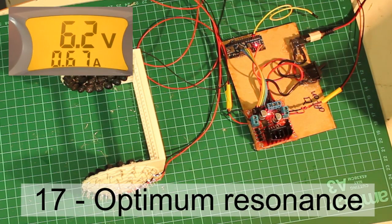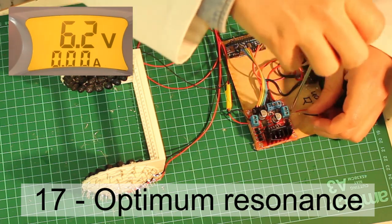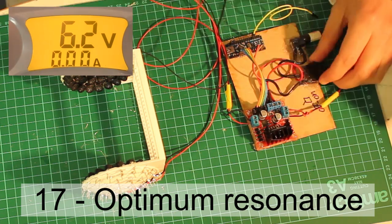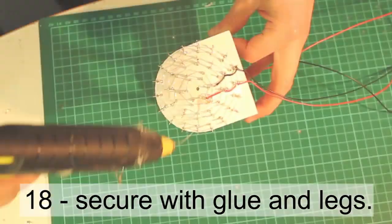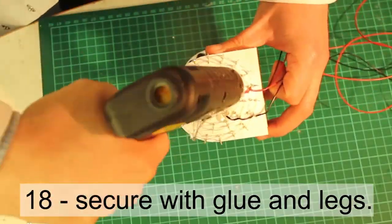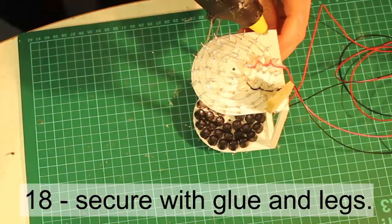For optimum operation, swap the wires and pick the one with minimum current consumption. Now that everything is ready, you can secure the wires with hot glue and glue the legs.